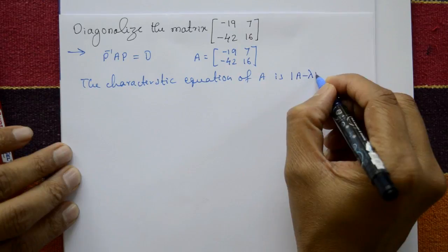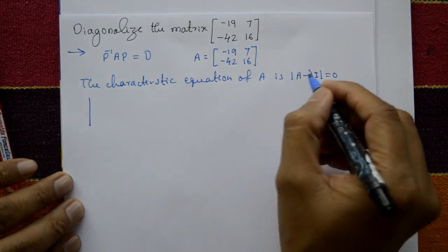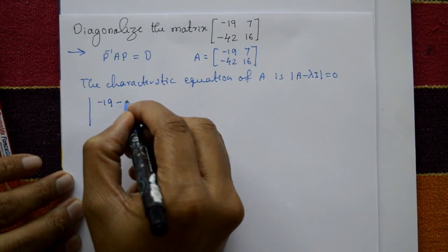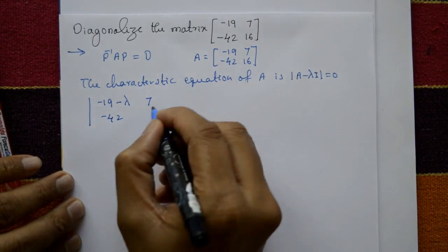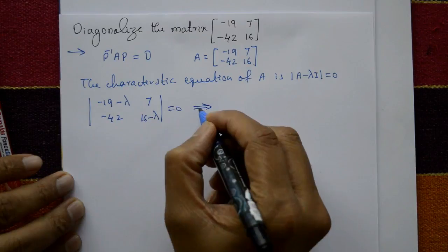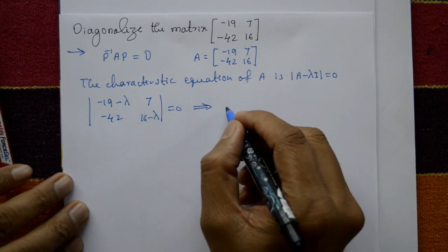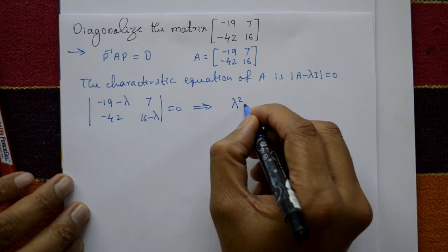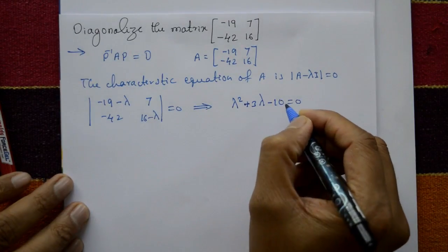The characteristic equation of A is: determinant of (A minus lambda I) equal to 0. This gives the matrix with minus 19 minus lambda, 7, minus 42, and 16 minus lambda, equal to 0. Expanding and simplifying this determinant, we get lambda squared plus 3 lambda minus 10 equal to 0.